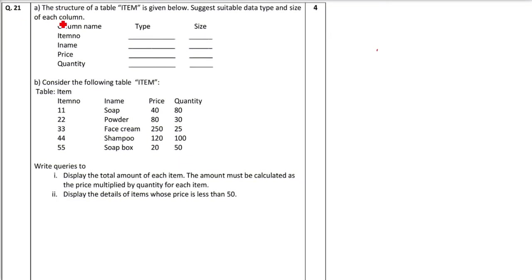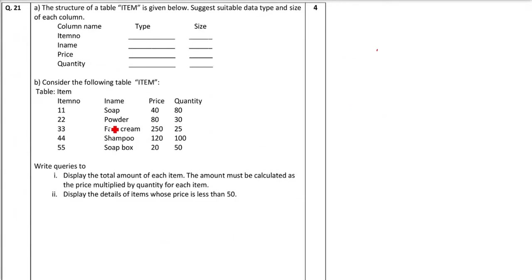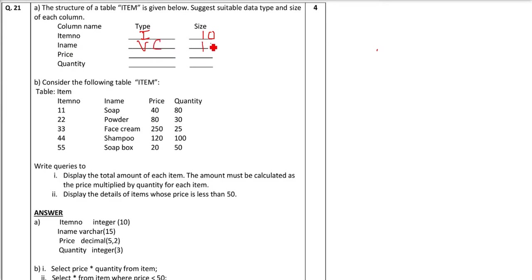The next question is, the structure of table item is given below. Suggest suitable data type and size of each item. So we are provided the column name that is the attributes. What will be the type and the size? So actually you have to give the DDL, data definition language for this. But we know that which type of attribute can take which type of values. For example, item number, it will take only numbers. So it can only be integer. So I am just writing it in short, I for integer. Size can be of your choice. So let me give you 10. Item name because it is a character. So we have VC, var char and then give it 15 or 20.